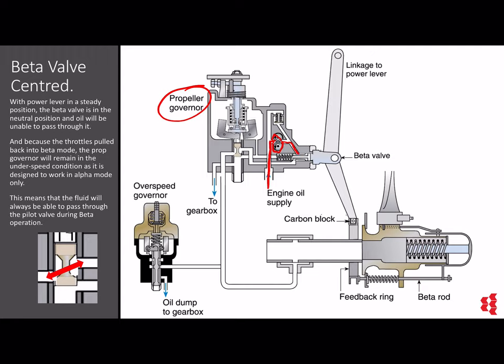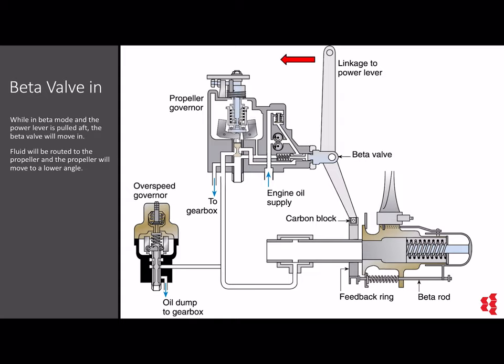Now if the pilot wants to control the power lever and move it — maybe to speed up or slow down the aircraft when it's taxiing — we may want to increase or decrease the blade angle. At the same time, we always have a pathway of oil to flow through the pilot valve because it's in that under-speed condition. So if the pilot was to pull the power lever back, we want to slow the aircraft down. That's exactly what's going to happen — we want to decrease the blade angle. Let's follow the oil flow as it goes through this governor. Notice the beta valve is in now, so oil is allowed to flow to the propeller and change the blade angle to a lower degree.